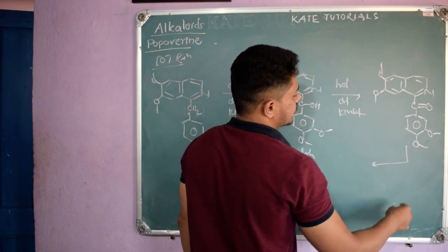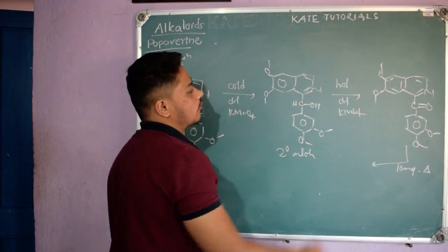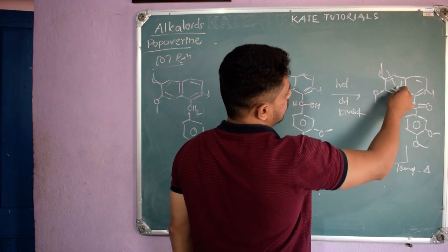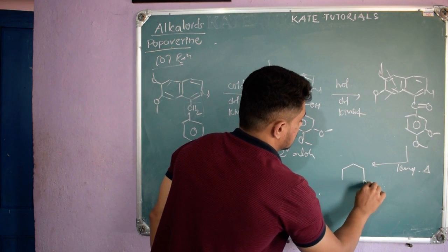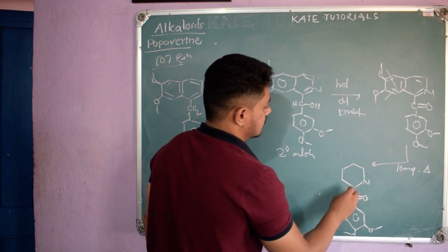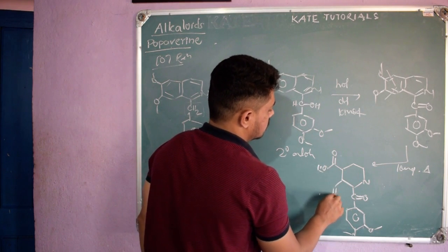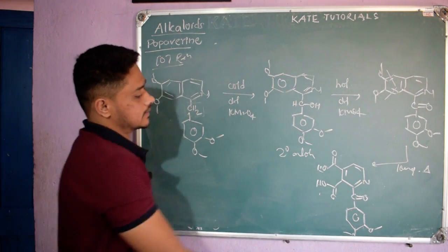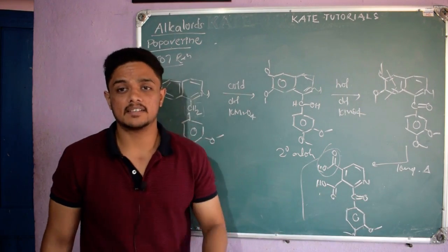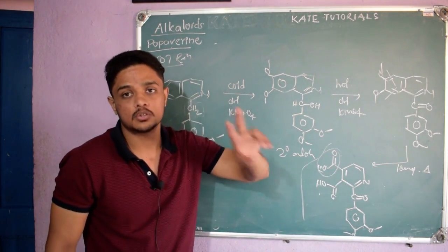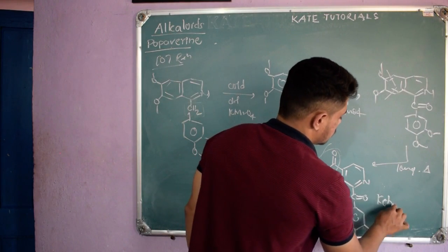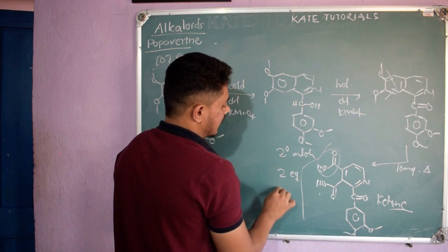If we continue prolonged heating with hot dilute KMnO₄, the pi bond of the ketone-containing ring is broken. We get a ketone fragment and two COOH groups — the ring opens to give two carboxylic acid groups from the aromatic ring. This compound gave a positive test for acid (two equivalents of COOH) and also a positive test for ketone.